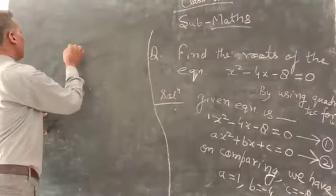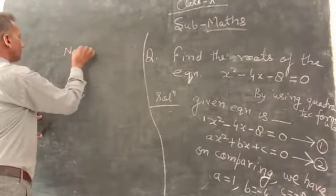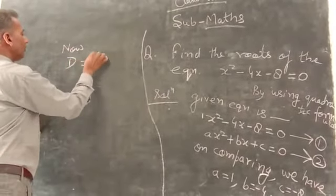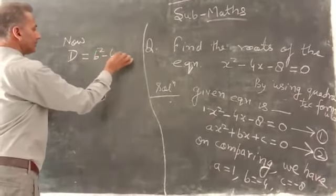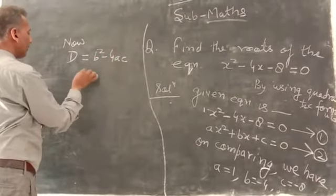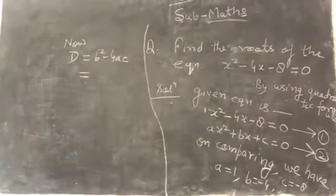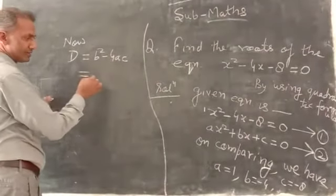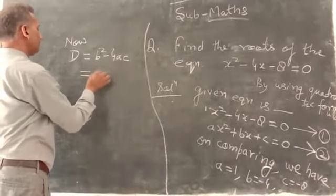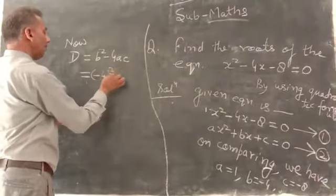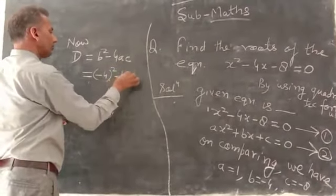So now D = b² - 4ac. Now put the value of a, b, c. b means -4, a means 1, and c means -8.